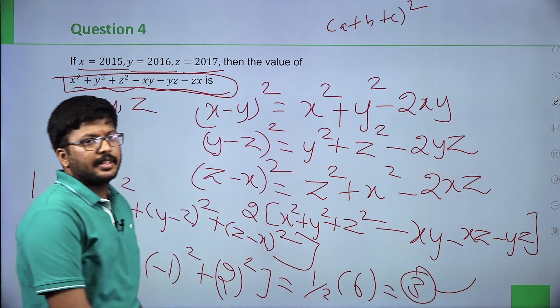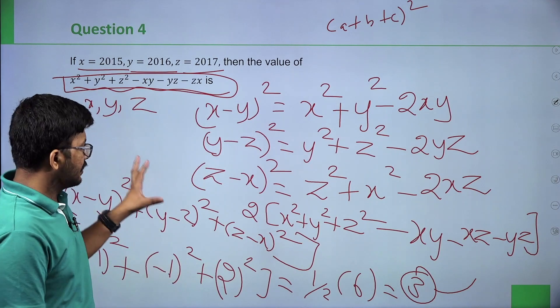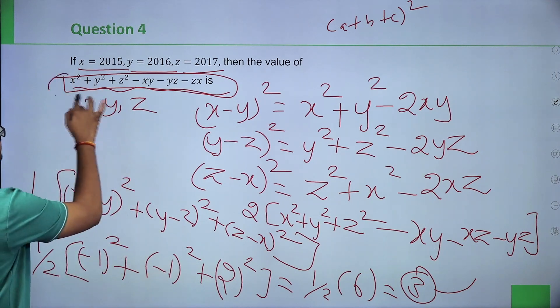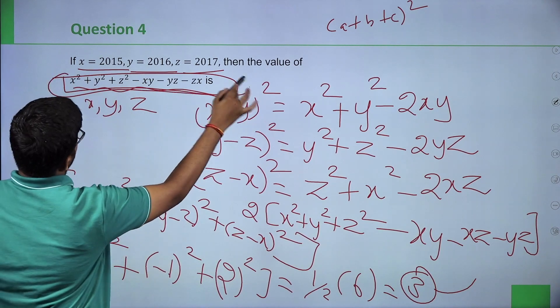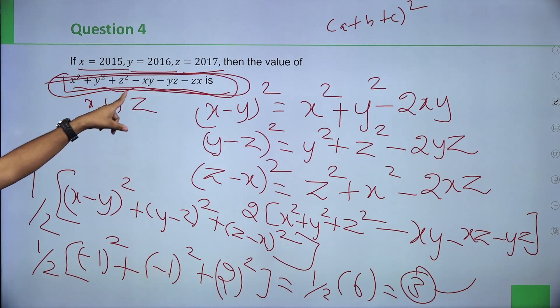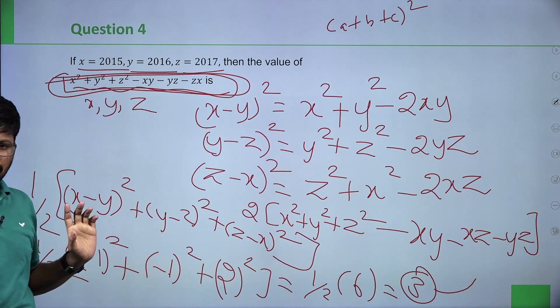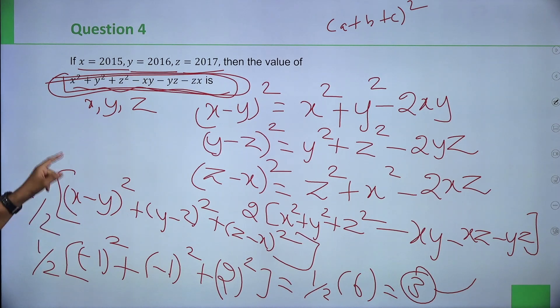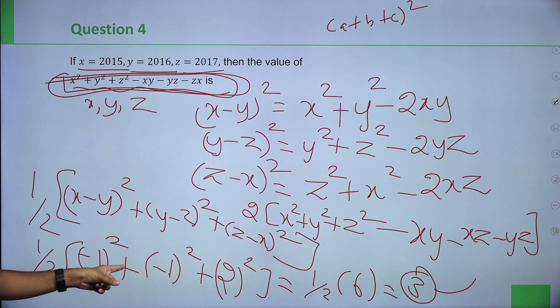So the answer to the question x square plus y square plus z square minus xy minus yz minus zx is 3.